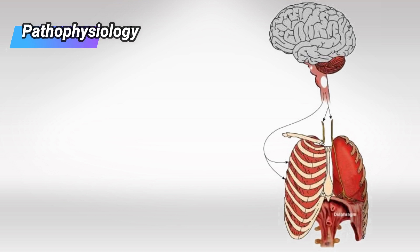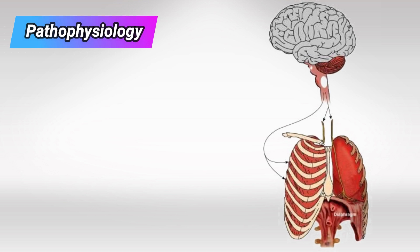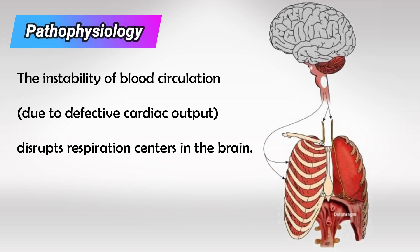When there is cardiac damage, the blood flow is disturbed. This causes irregularities in the carbon dioxide levels, which in turn affects the breathing center in the brain.